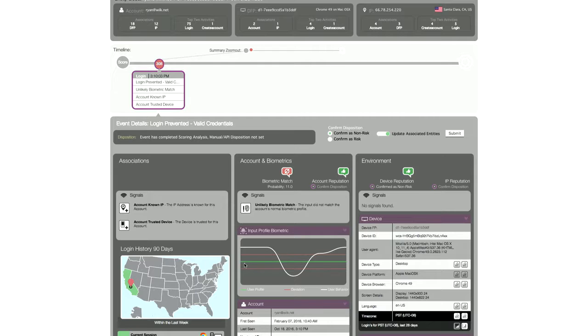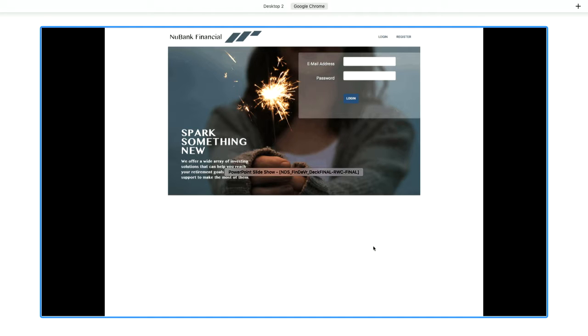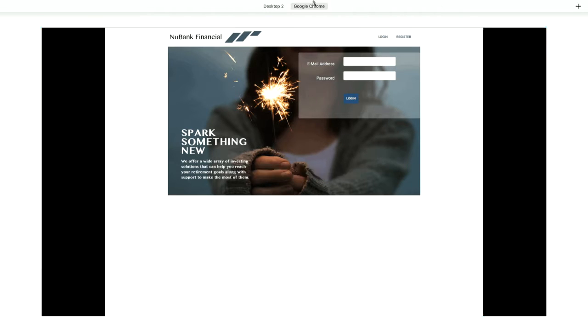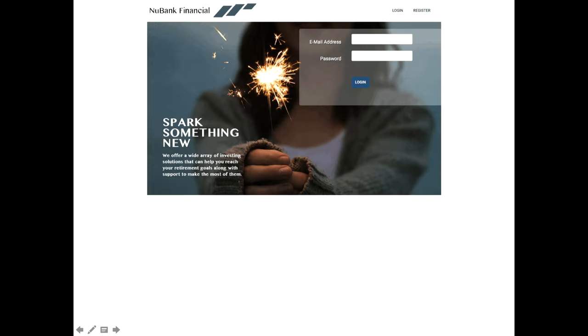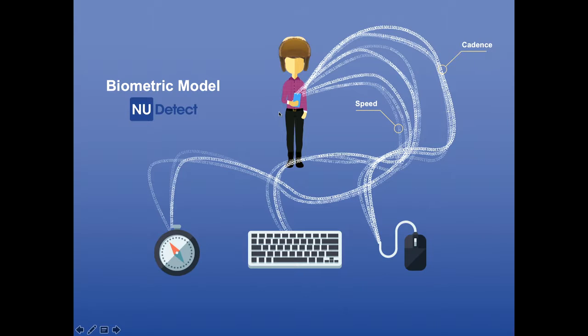So now that we've taken a look at the actual demo, let's dig in a little bit more into the technology and understand what the technology is doing that allows this to occur. So what's happening? As I'm interacting with either a web device, a mobile device, an API, we're collecting lots of different data elements, lots of different features around how I'm interacting.